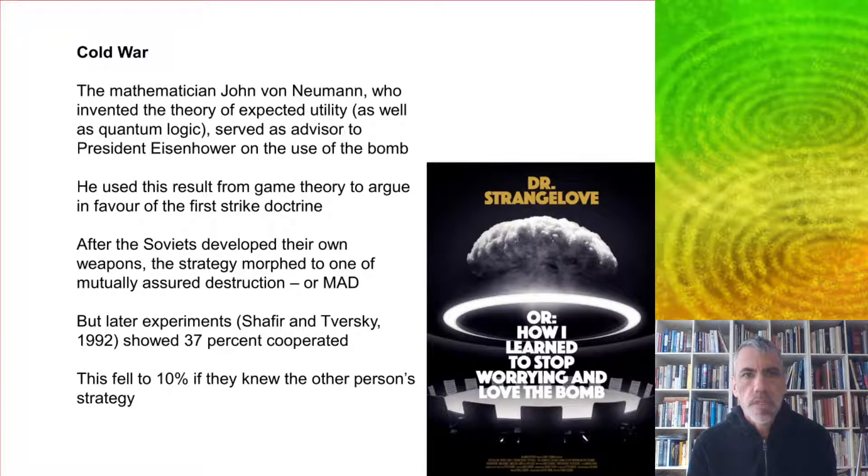Game theory was invented in large part by the mathematician John von Neumann, who also invented the theory of expected utility and later quantum logic. He was serving as an advisor to President Eisenhower on the use of the bomb, and he used results from game theory to argue in favor of the first strike doctrine.